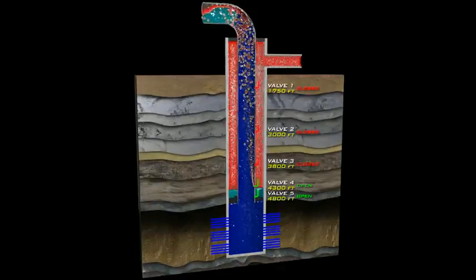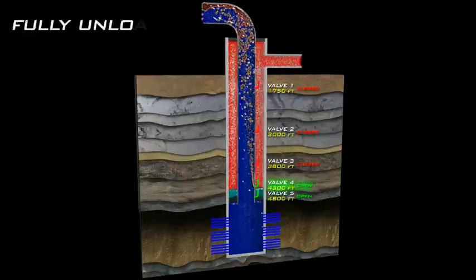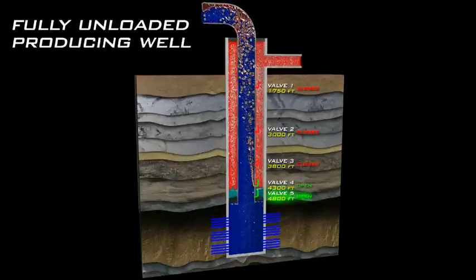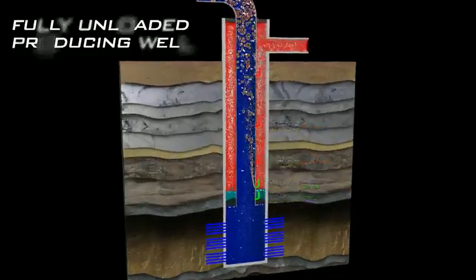The valve at the point of injection remains open, as does the submerged valve below it. Fluids can continuously unload through these valves, and the well is able to flow at its optimal rate.